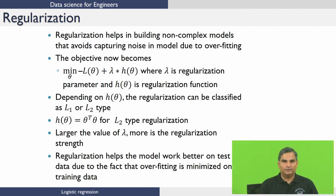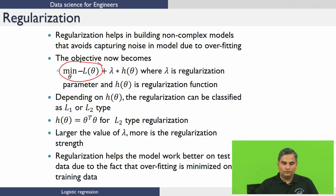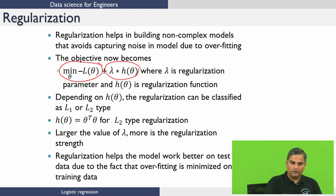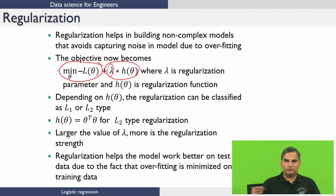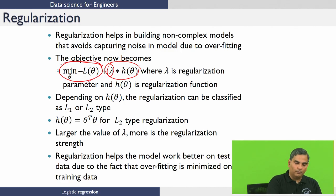Regularization avoids building complex models, helping to reduce overfitting effects. To penalize the coefficients, we add another term to the objective: lambda is called the regularization parameter and h(theta) is some regularization function. When the values of theta are large, this function is large, so a penalty kicks in immediately when you choose a variable. This penalty must be offset by the improvement in the log likelihood term. That is the basic idea behind regularization.